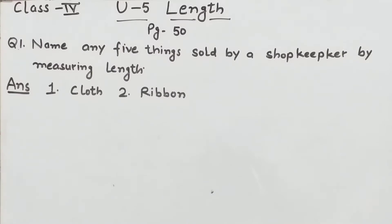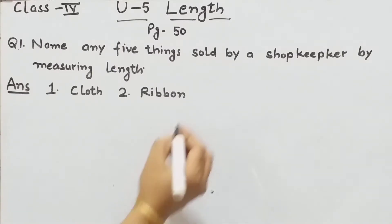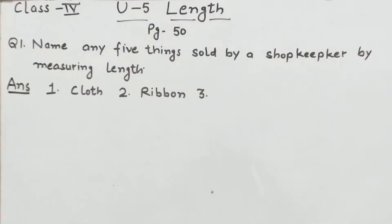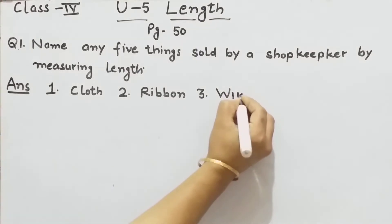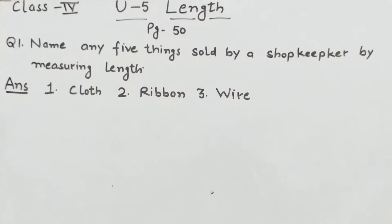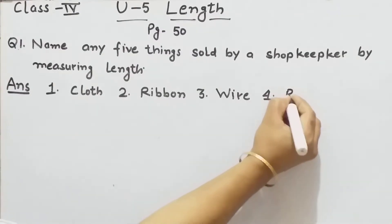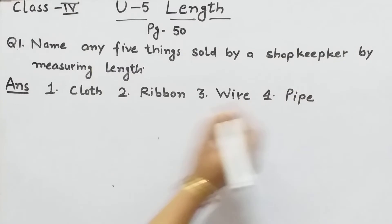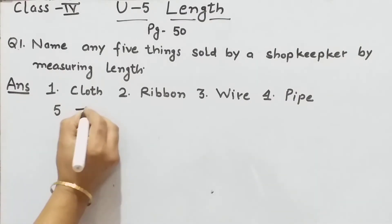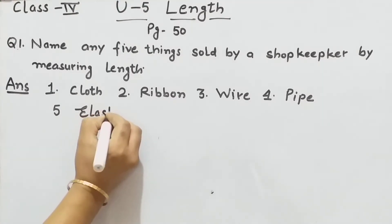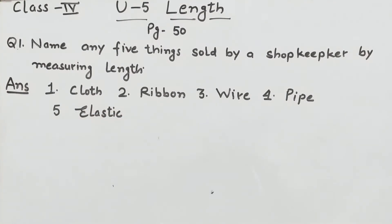और item सोचो जो shopkeeper measure करके हमें sale करेगा। Third item है wire — जब हम कोई तार लेते हैं, shopkeeper उसे भी उसकी length को measure करके हमें sale करता है। Fourth item है pipe — pipe भी length को measure करके ली जाती है। Fifth item है elastic। इस तरह से आप और भी बहुत से item लिख सकते हो जो shopkeeper हमें length measure करके sale करता है।